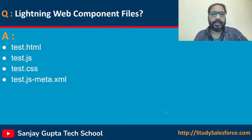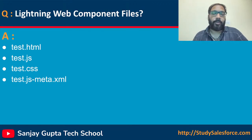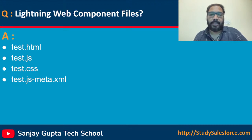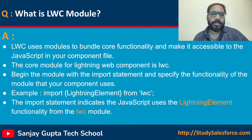Moving on to the next question: Lightning Web Component files. There are a total of four files, and while explaining each file you need to explain the uses as well — why to implement .html, why .js, why .css, and why the .js-meta.xml file. All these files are useful and part of Lightning Web Components. A proper explanation will be coming in the upcoming questions.